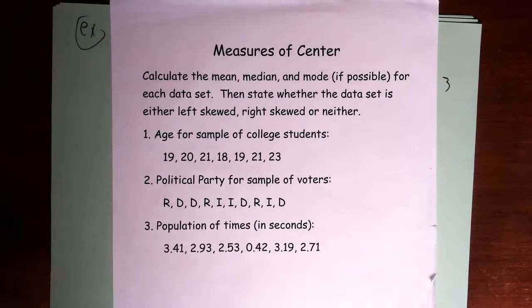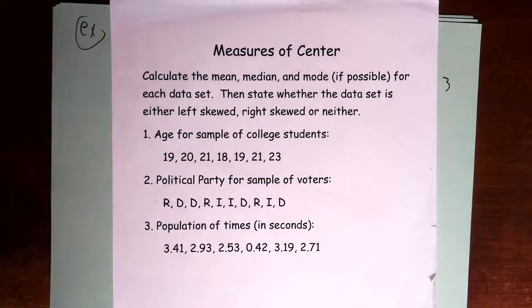And then you also need to use the rounding rule. And then when you're done, in each case, if it's applicable, then determine whether the data set is left skewed or right skewed or symmetrical. So go ahead, press pause, give this a try, and then you can start it back up again and see how you do.